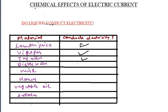Distilled water is not a good conductor of electricity as it is neutral and does not contain any salt. Milk is also a bad conductor of electricity as it does not contain any salt and is neutral. Honey is a bad conductor of electricity as it is also neutral. Similarly, vegetable oil does not contain any salt, so it is a bad conductor of electricity.